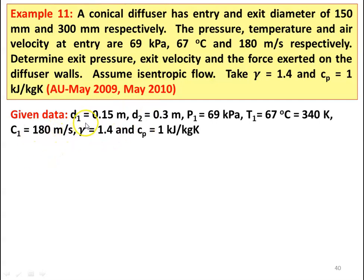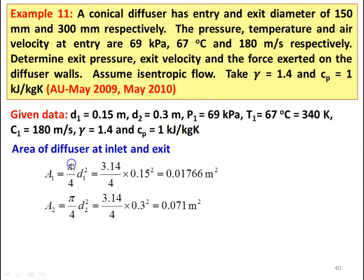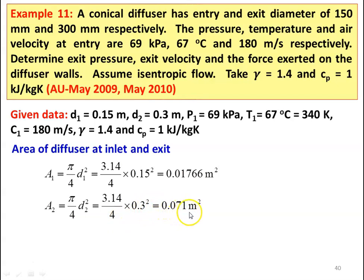We write down the given data: diameter D1 equal to 0.15 meter, D2 exit diameter is 0.3 meter, pressure at inlet P1 equal to 69 kilo Pascal, temperature T1 equal to 67 degree Celsius which is 340 Kelvin, velocity C1 equal to 180 meters per second, gamma equal to 1.4, and Cp equal to 1 kilo Joules per kilogram Kelvin. Area of the diffuser at the inlet: A1 equal to pi by 4 into D1 square equal to 0.0176 meter square, and A2 at the exit equal to pi by 4 into D2 square equal to 0.071 meter square.